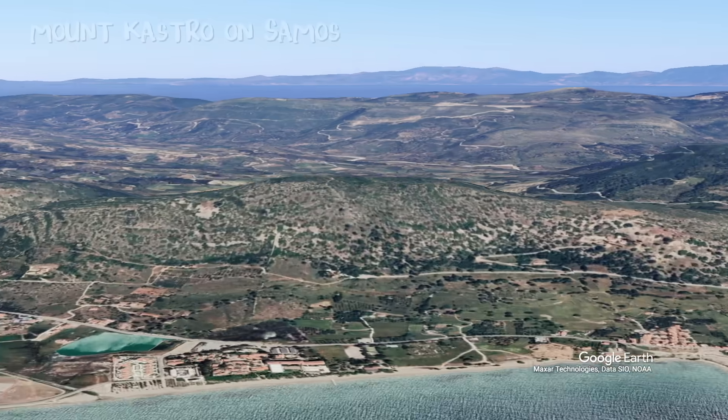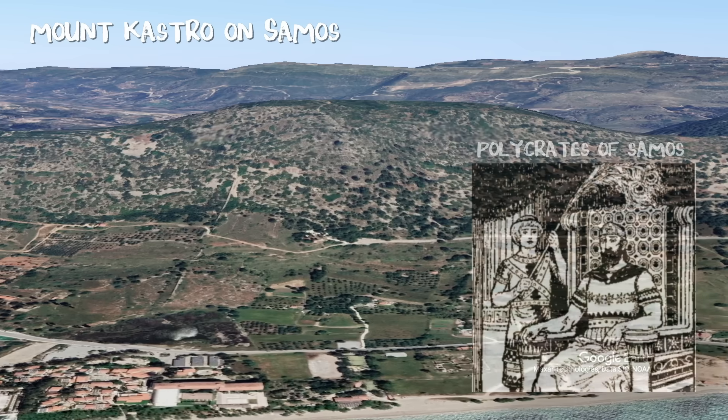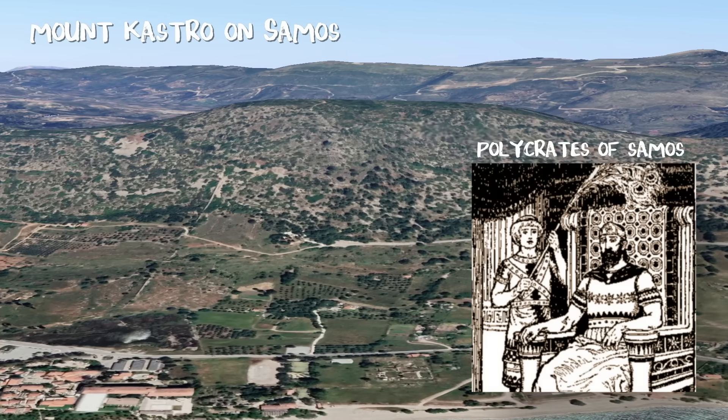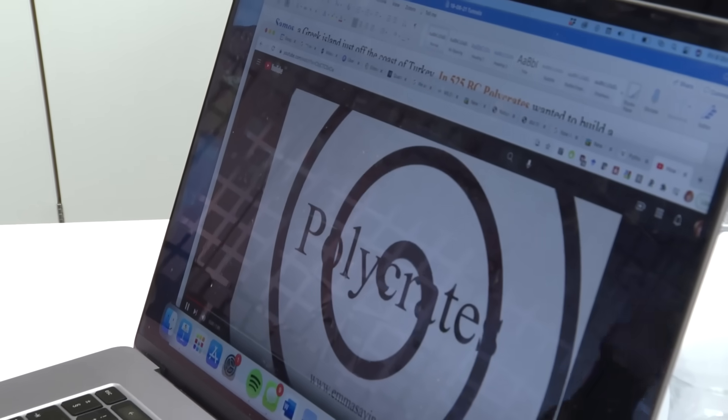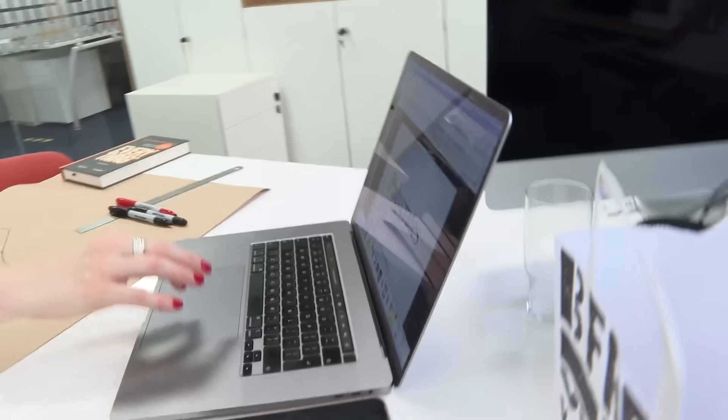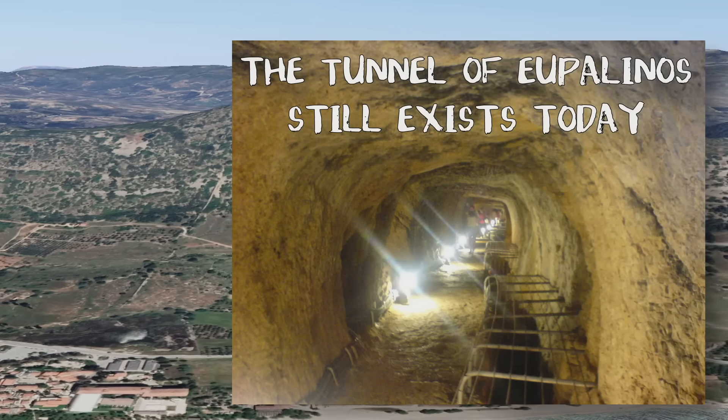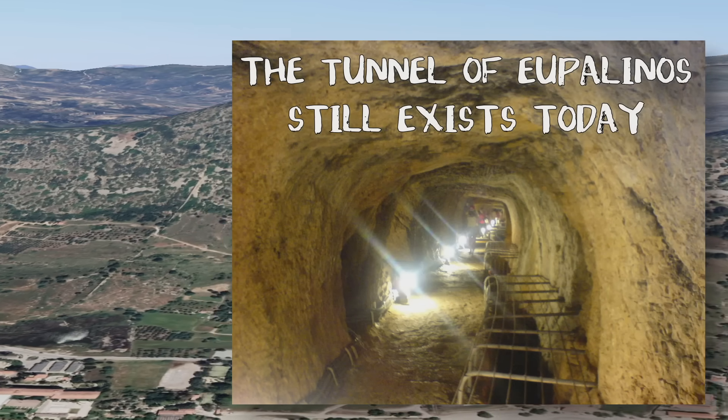This particular mountain, this is Samos. And this was in 525 BC. Polycrates. I don't think it's called Polycrates. How do you pronounce Polycrates? Polycrates. Oh, it's Polycrates. Whatever. Polycrates. He wanted a tunnel. Polycrates. You can shush. Polycrates, he wanted this tunnel. It's a kilometer long. 525 BC this is built.